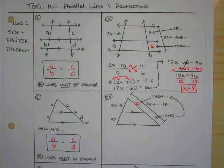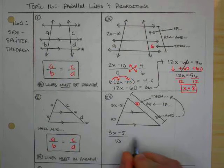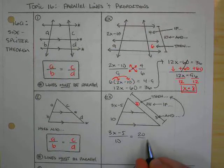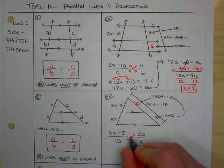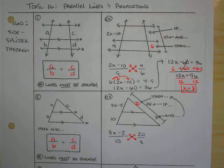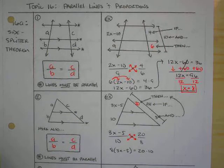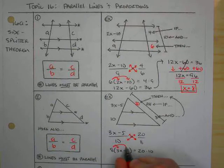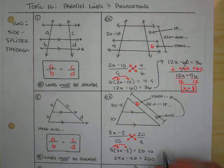Now I do have enough information to set up my proportion. So I'm going to say 3X minus 5 over 10 is equal to 20 divided by 8. I'm going to cross multiply here. I'm going to get 8 times 3X minus 5 equals 20 times 10. When I distribute and simplify, I get 24X minus 40 equals 200.